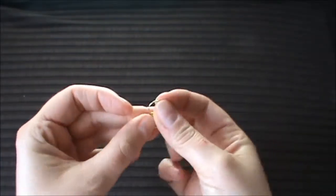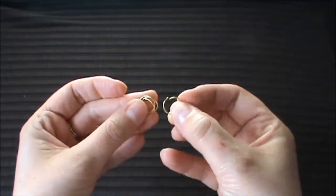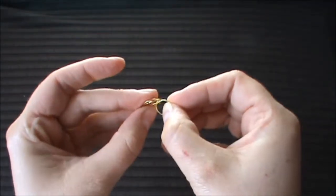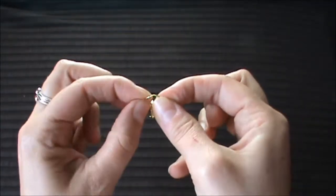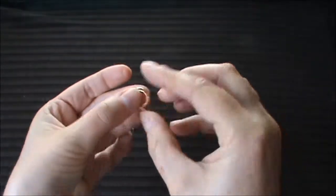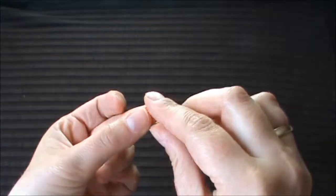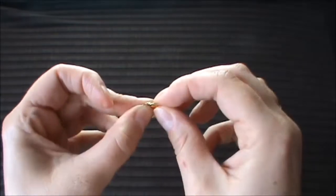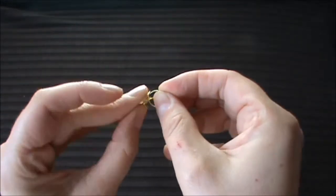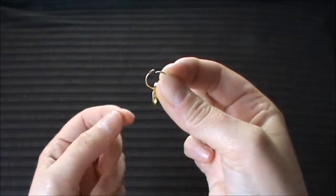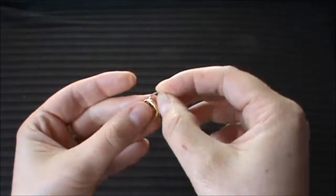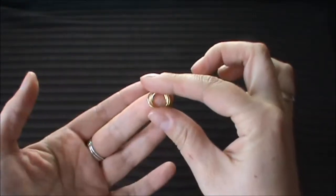Now the fourth one, open it, attach the three jump rings to it, close it. And the fifth jump ring, open it, attach the four jump rings to it and close it. Now our loop element is ready.